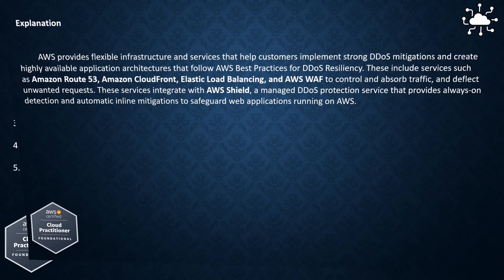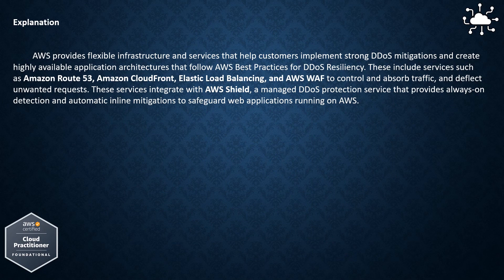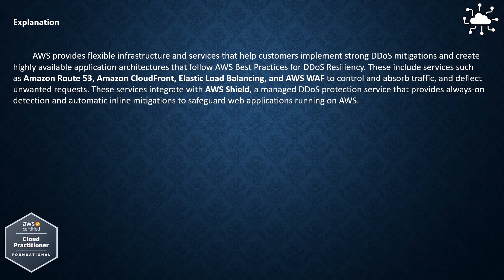AWS provides flexible infrastructure and services that help customers implement strong DDoS mitigations and create highly available application architectures that follow AWS best practices for DDoS resiliency. These include services such as Amazon Route 53, Amazon CloudFront, Elastic Load Balancing, and AWS WAF to control and absorb traffic and deflect unwanted requests. These services integrate with AWS Shield, a managed DDoS protection service that provides always-on detection and automatic inline mitigations to safeguard web applications running on AWS.